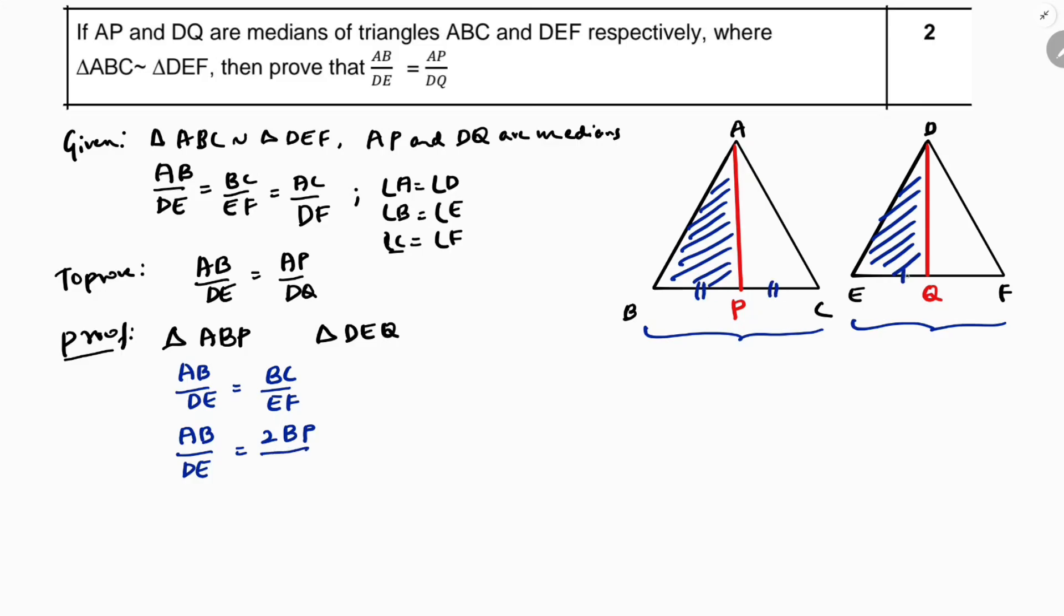So, and EF I can write as 2EQ. Just write the reason because AP is a median. And you can write, there is BP equals PC. And EQ equals QF. It's given, because they told AP is a median and DQ is a median.